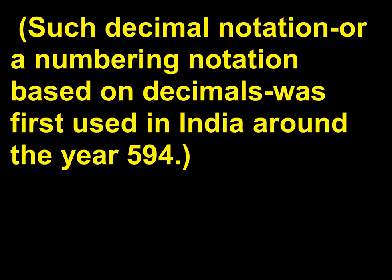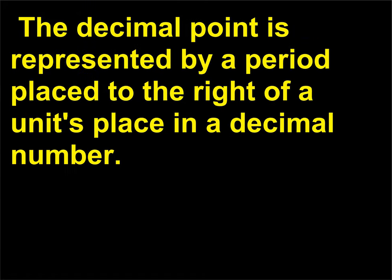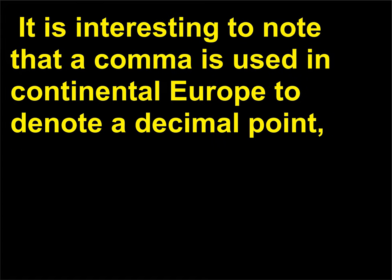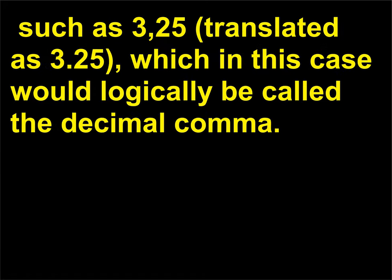Such decimal notation, or a numbering notation based on decimals, was first used in India around the year 594. The decimal point is represented by a period placed to the right of a unit's place in a decimal number. It is interesting to note that a comma is used in continental Europe to denote a decimal point, such as 3,25 translated as 3.25, which in this case would logically be called the decimal comma.